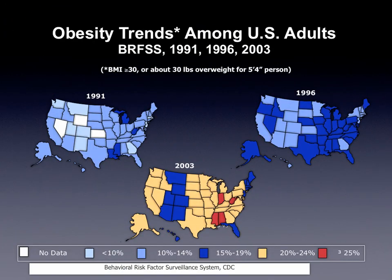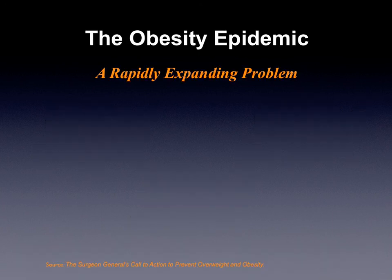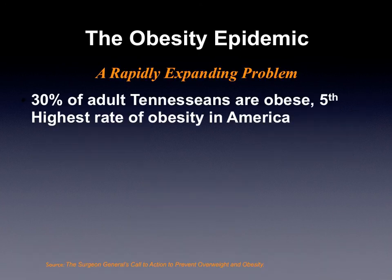If you look at the trends, this is data from the CDC. Looking at 2003, walking back to 1996 and 1991, there has been an expansion — we have gotten heavier as a nation. Every single state has seen growth in obesity rates, nearly to between 20 and 30 percent. The trend has not been good. Here in Tennessee, where I practice, nearly one-third of adult Tennesseans are obese, and we have ranked between second and fifth as the heaviest states in America.